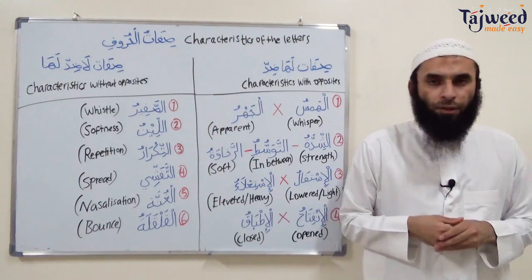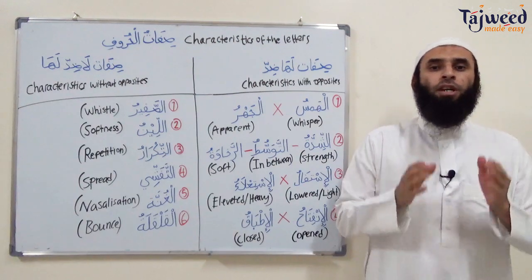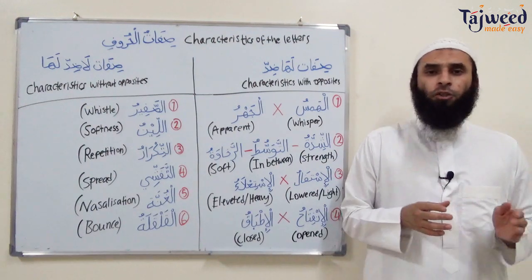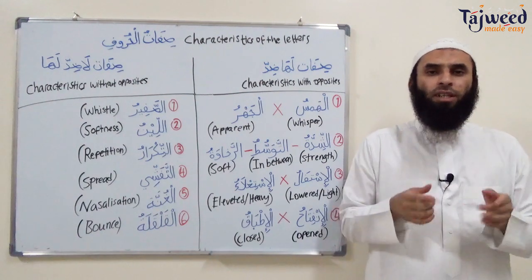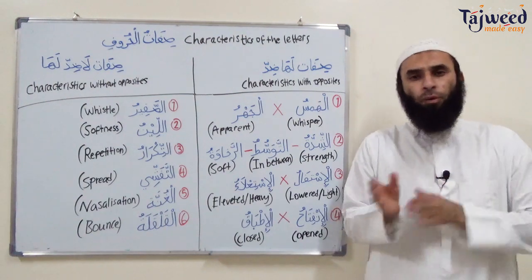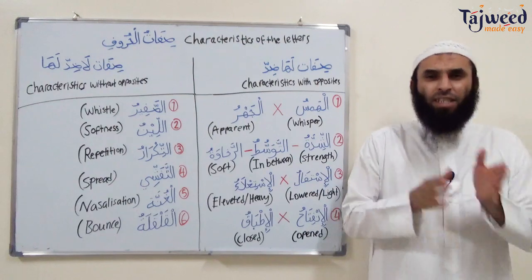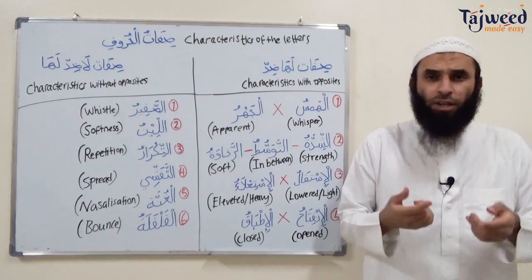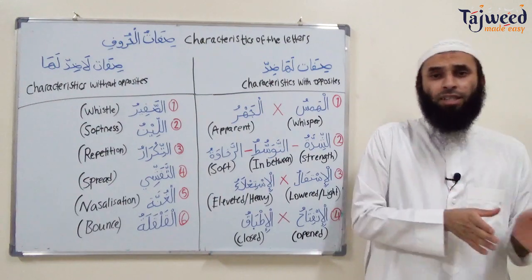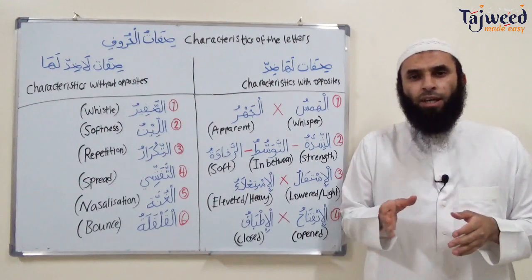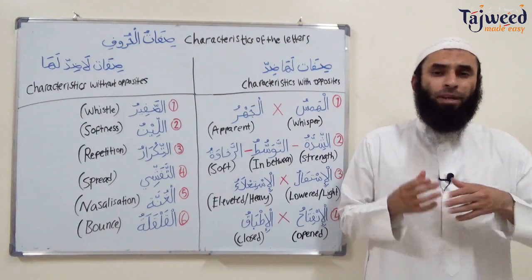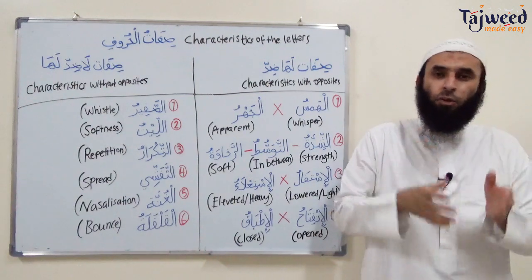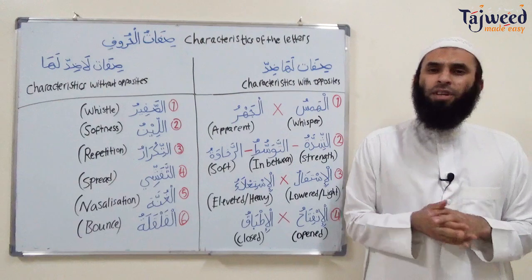We find out how the letters are pronounced. It is not enough to know where the Makharij al-Huroof are, to know where the places of articulation are. It's very important to also know how we pronounce them. Because if we don't pronounce the letters properly, even if we take out from the correct Makharij, if we do not give it its correct characteristics, the letter might even change to another letter, or at the least it's not going to be pronounced properly.